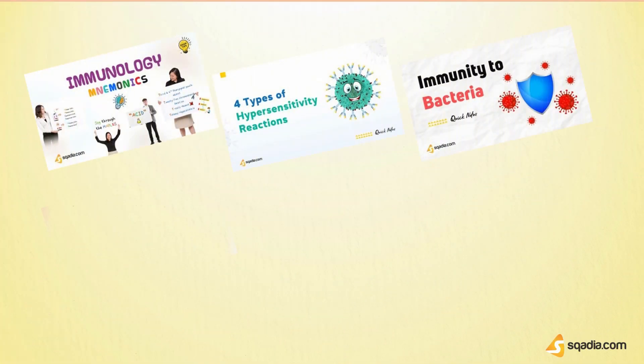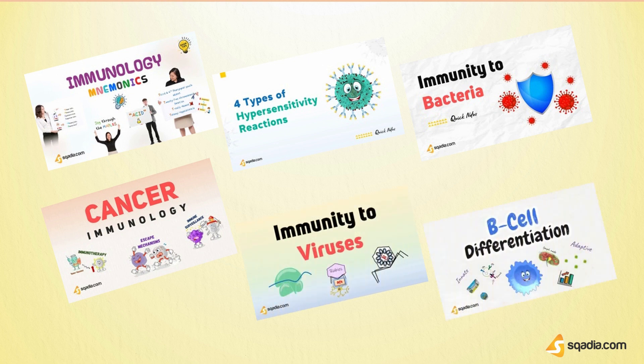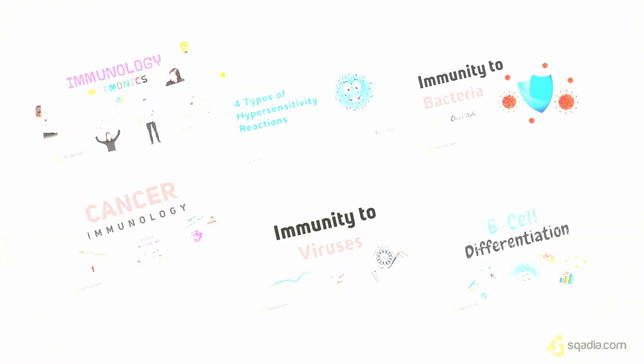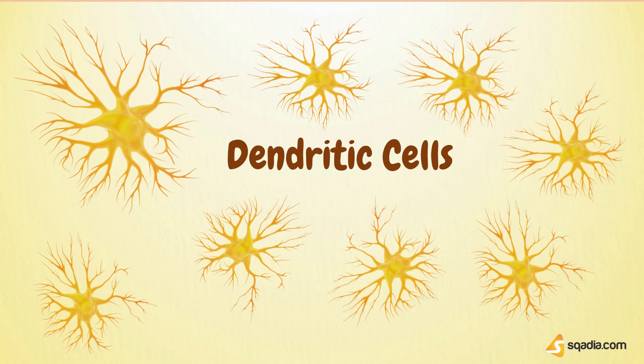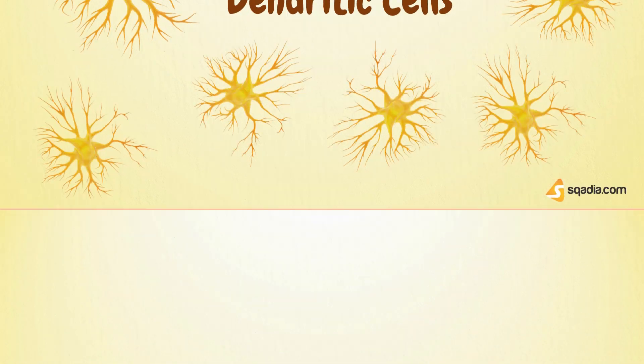You must have seen a lot of videos on scadia.com about the immune system, its components, and how all these components work in collaboration to provide the best protection to our body. Among many important cells that are part of our immune system and that are directly involved in the provision of immunity to our body, are the dendritic cells.